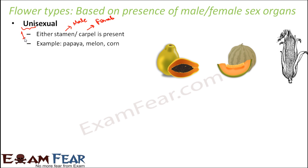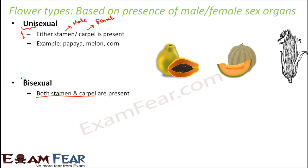Examples of unisexual flowers are papaya, melon, and corn. You might think of papaya as a fruit, but the papaya plant has a flower, which through reproduction gives rise to seeds, and from that you get the fruit.